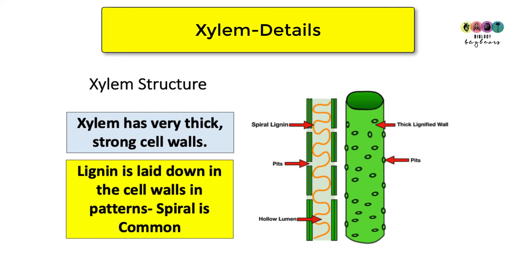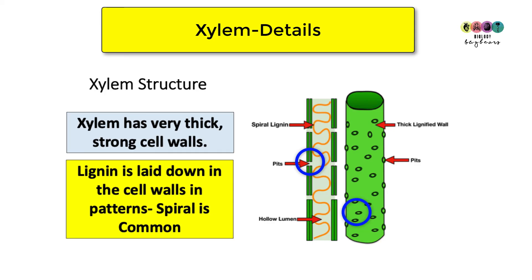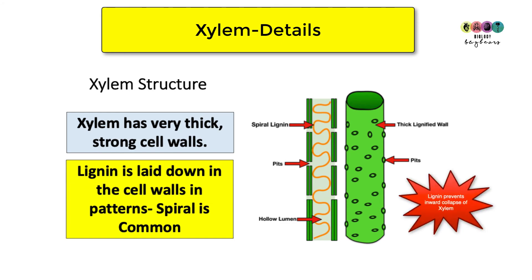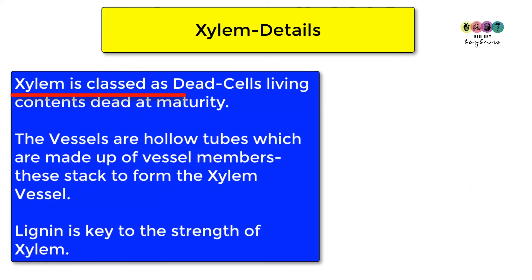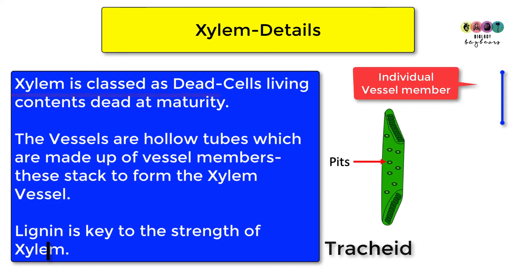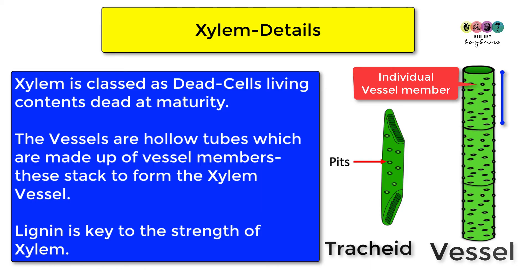This diagram shows the longitudinal section of a xylem vessel, highlighting key features: a hollow lumen through which water and dissolved minerals flow, pits in the cell walls through which water can pass sideways, and very thick cell walls further strengthened by lignin. Lignin is laid down in particular patterns — spiral being one — and it's the presence of lignin that makes xylem strong and prevents it from collapsing inwardly. Xylem is classed as dead because the living contents of the tracheids and vessel members have died at maturity. The vessels are long hollow continuous tubes made up of individual vessel members stacked on top of each other.